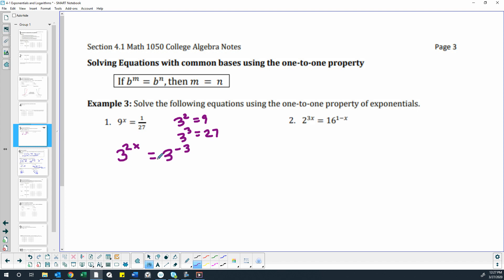Okay, now that we have the same base of 3 on each side, we can use the one-to-one property that says 2x must be equal to negative 3. If this statement, that these two exponentials are equal, is true, they have the same base, the exponents must also be the same.